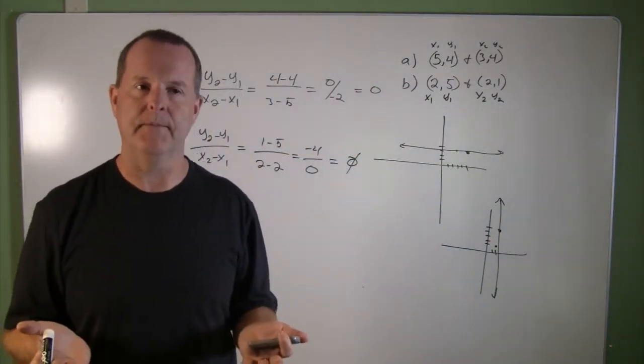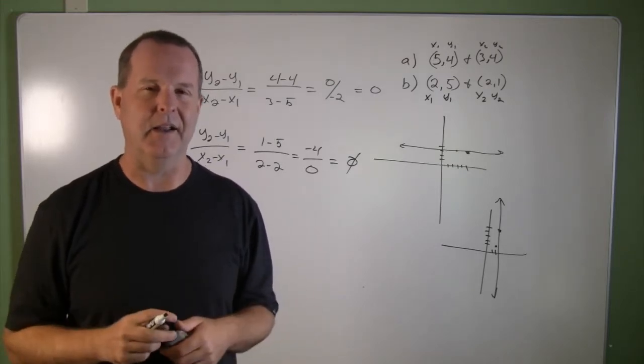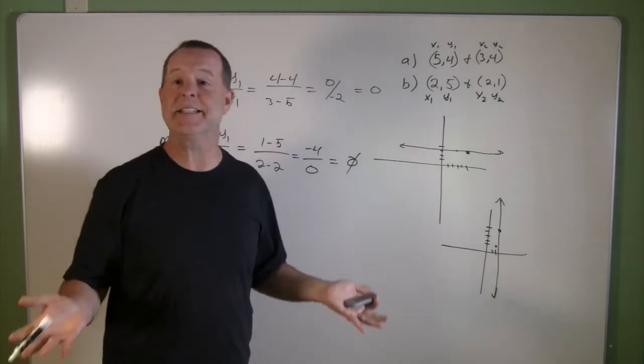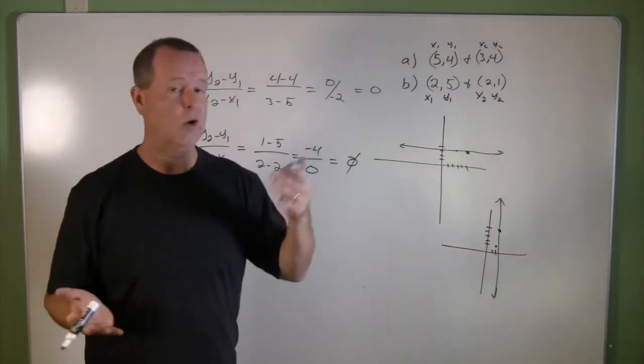And a vertical line has a, it's hard to describe, but basically the slope doesn't exist. It just goes straight down.